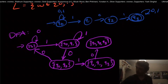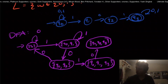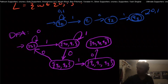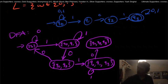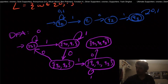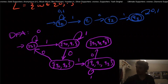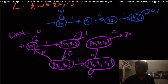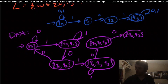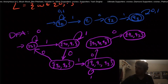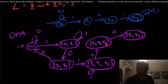From {q0, q1, q3} on input one: q3 goes to itself, q0 goes to itself and to q1. So in fact we stay in {q0, q1, q3} on one — it's a self-loop. From state {q0, q2, q3} on input zero: q0 goes to itself, q2 has no transition on zero, and q3 goes to itself. So we go to state {q0, q3}. And on input one from {q0, q2, q3}: q0 goes to q0 and q1, q2 goes to q3, q3 goes to itself — so we go to state {q0, q1, q3}.